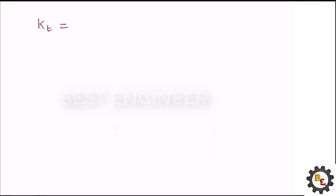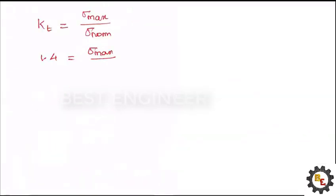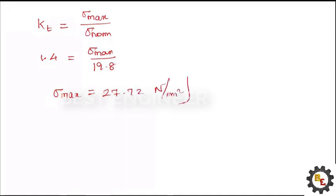We know the formula: stress concentration factor equals maximum stress divided by nominal stress. So we have kt equal to 1.4, which equals sigma max divided by 19.8. Therefore, the maximum stress is 27.72 Newton per millimeter squared.